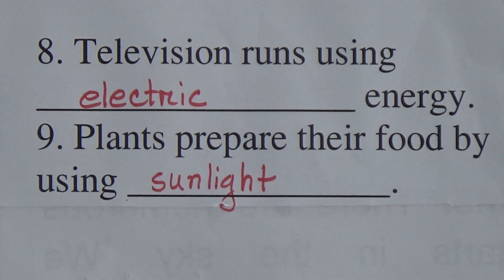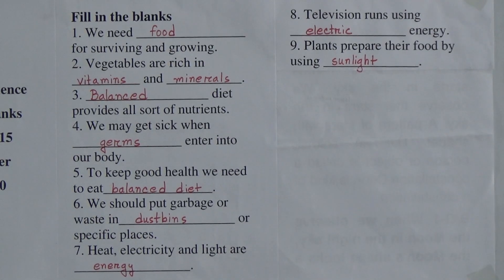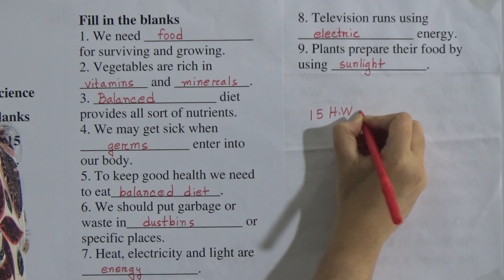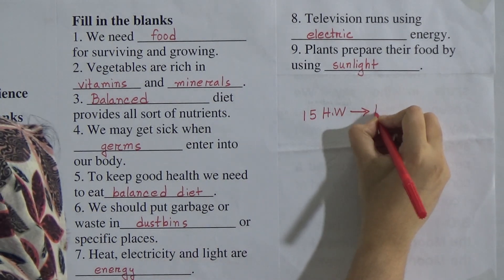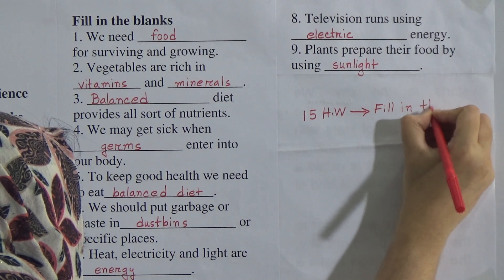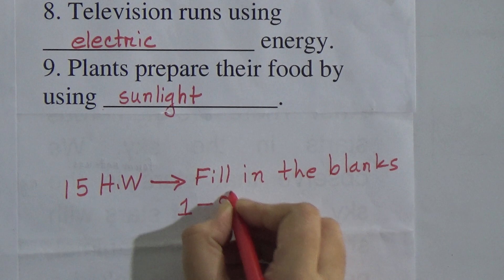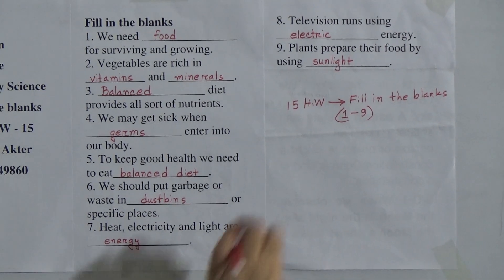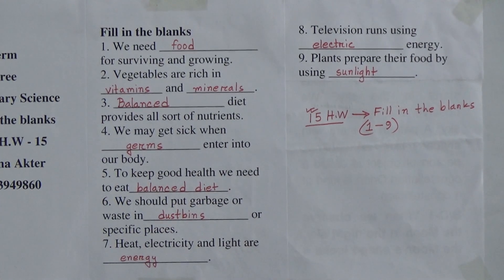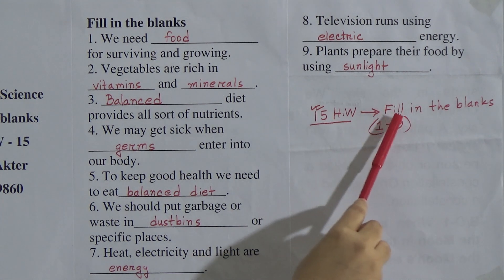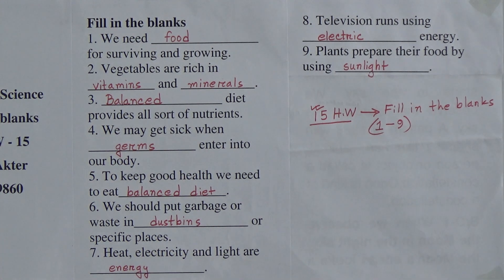Dear students, I have finished today's topic. Now I will give you your SW. Today's SW number is 15. Your SW will be this fill in the blanks, from number one to nine. Remember, when you do your SW, please write SW number 15 on top of your SW copy. In our next class we will do fill in the blanks from 10 to 18.